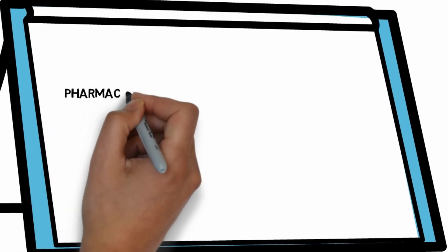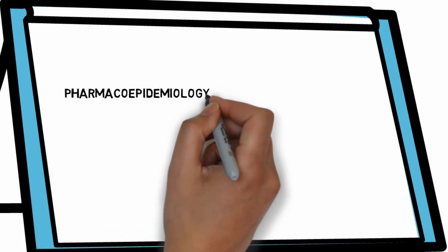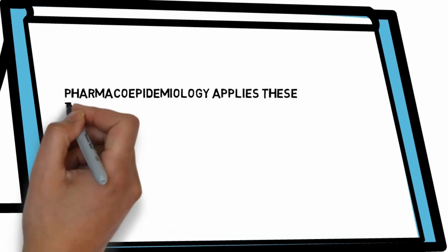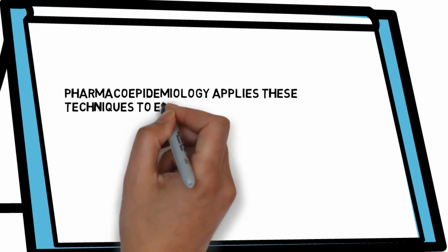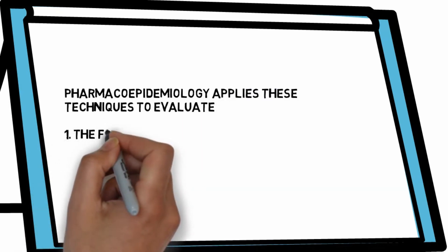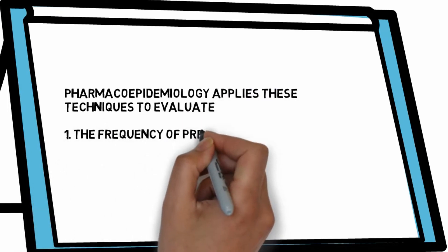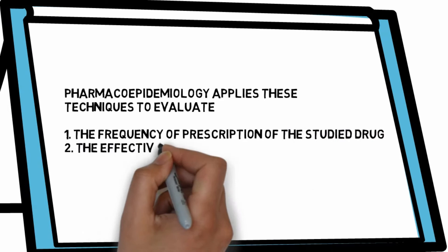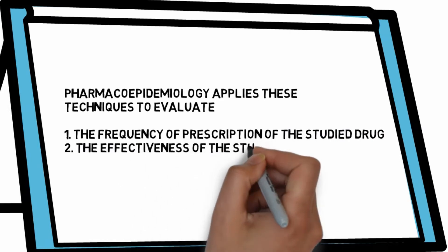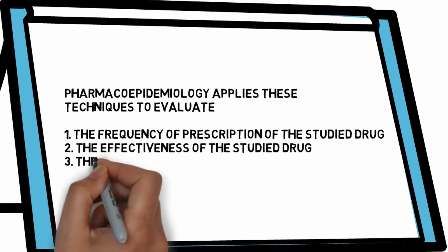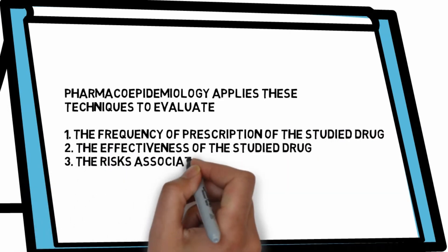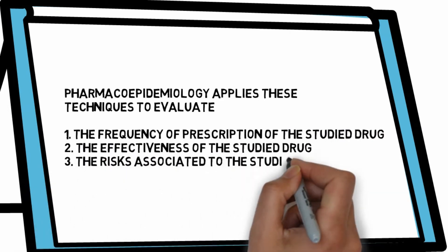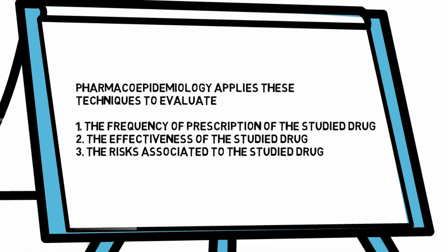Pharmacoepidemiology applies these techniques to evaluate: one, the frequency of prescription of the studied drug; two, the effectiveness of the studied drug; three, the risks associated with the studied drug.